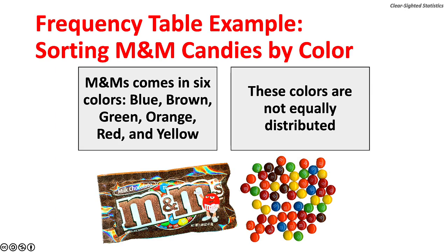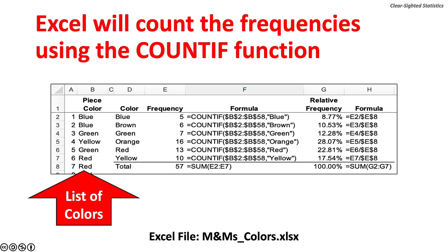For our example, we will construct a frequency table by sorting a bag of M&Ms by color. Color is a qualitative measure. M&Ms come in six colors: blue, brown, green, orange, red, and yellow. The six colors in a bag of M&Ms are not equally distributed. With the frequency table, we will add a quantitative dimension by counting the number of candies — the frequencies — of each color. Excel will count the frequencies using the COUNTIF function, which has two arguments: the cell range for the data, and the criteria for the data you want to count, which in this case is one of the six colors. You could also easily count the colors by hand.